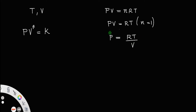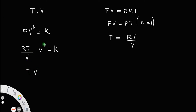If you substitute the value of P, that is RT by V, in here, you will get RT divided by V into V raised to gamma equal to a constant. This simplifies to T times V raised to gamma minus 1 equal to K divided by R.